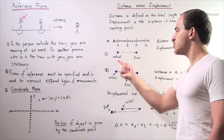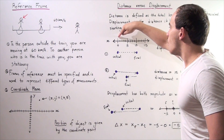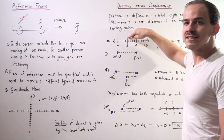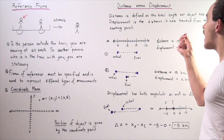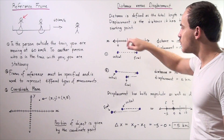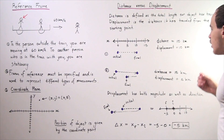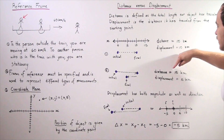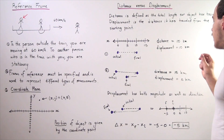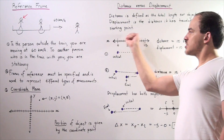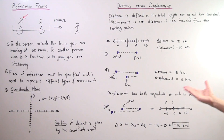Let's look at the second example. Our person starts at the origin — zero — moves to 10, and then moves back to 5. The total distance traveled is: it goes from 0 to 10, that's 10 kilometers, and then 5 more, so 15 kilometers total. What about displacement? The initial position is at 0 and the final position is at 5. So final minus initial: 5 minus 0 is 5. So although the distance is 15 kilometers, our displacement is 5 kilometers in the positive direction. Displacement has both magnitude as well as direction.